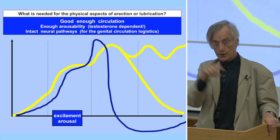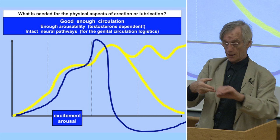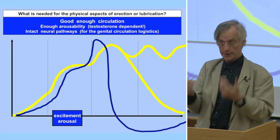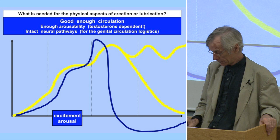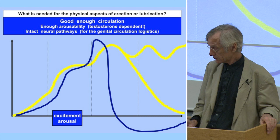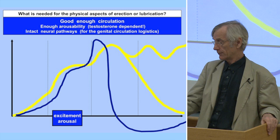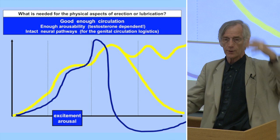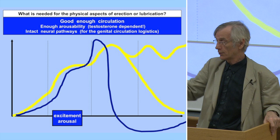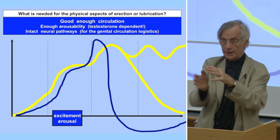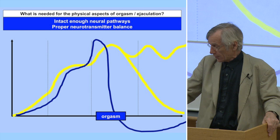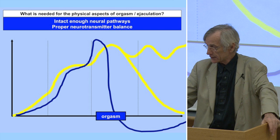The other function of lubrication is mechanical: intercourse is essentially a piston in a cylinder, and the cylinder must be oiled — that is the lubricative fluid produced during arousal. Without it there is friction and pain. For all this you need proper circulation and good arousability — what happens in the brain, where testosterone receptors allow you to get truly aroused — and also good neural pathways to guide the circulation.